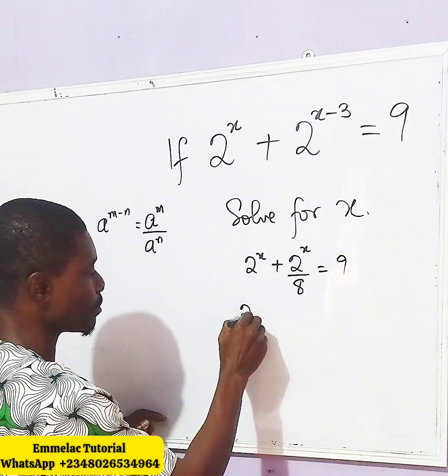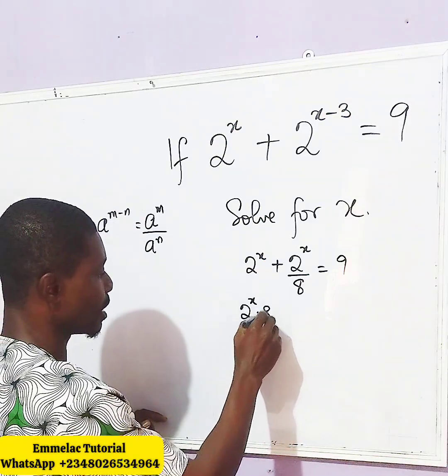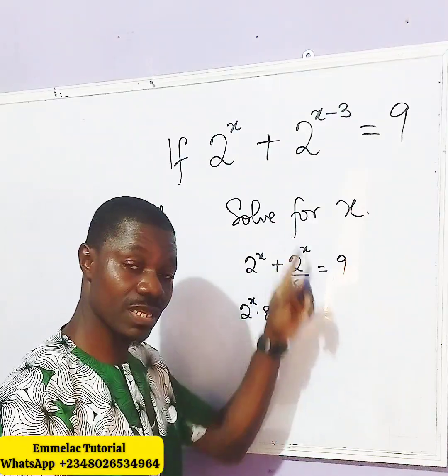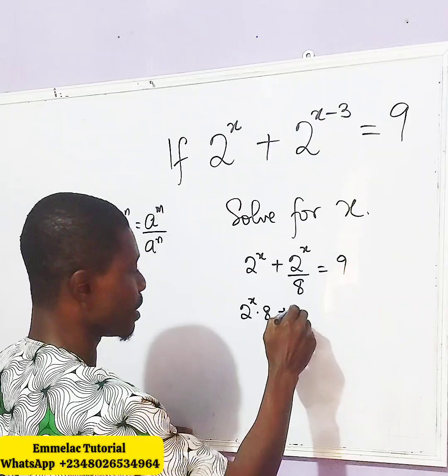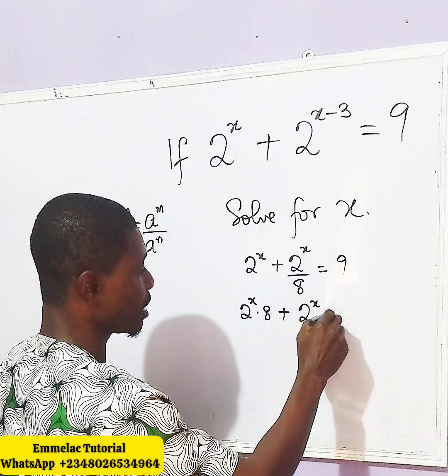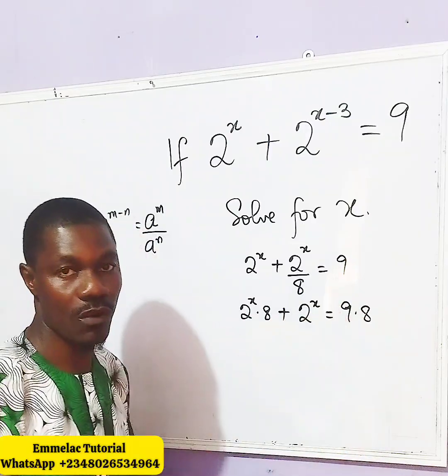Which implies 2 raised to x times 8 plus multiplying this fraction here by 8, we undo this remaining 2 raised to x, then equals 9 times 8.